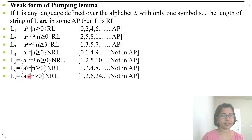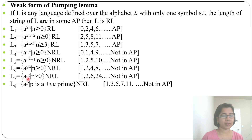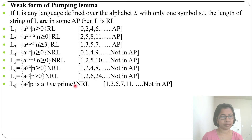Next, L = {a^(n!) | n ≥ 1}: 1!=1, 2!=2, 3!=6, 4!=24 — not in AP, so non-regular. Finally, L = {a^p | p is a positive prime}: the sequence is 2, 3, 5, 7, 11, 13, 17, ... — not in AP, so this is also a non-regular language.